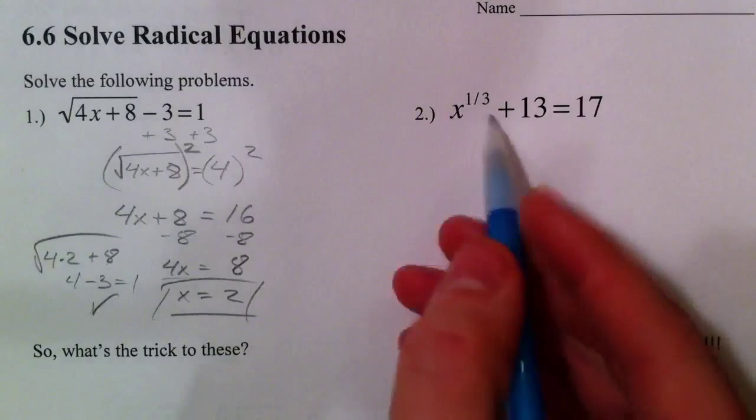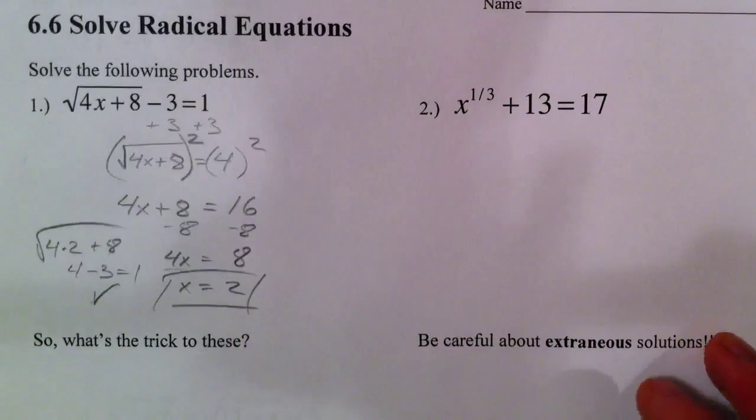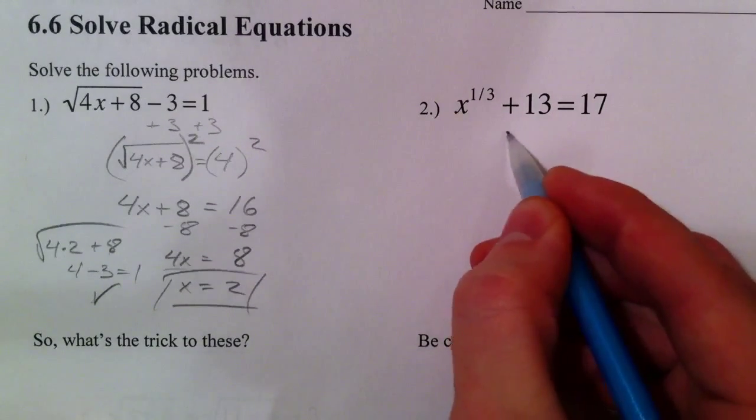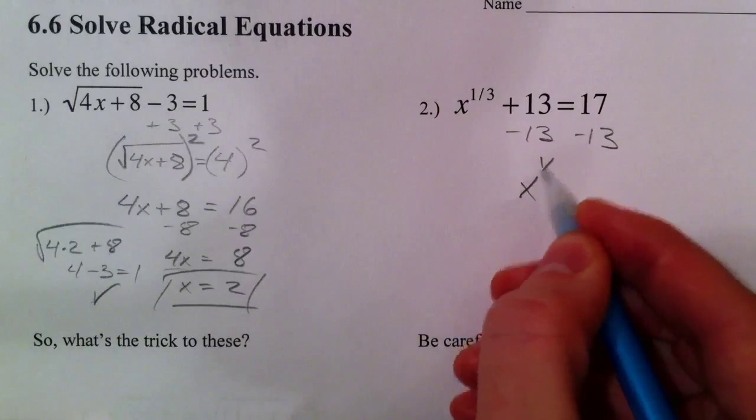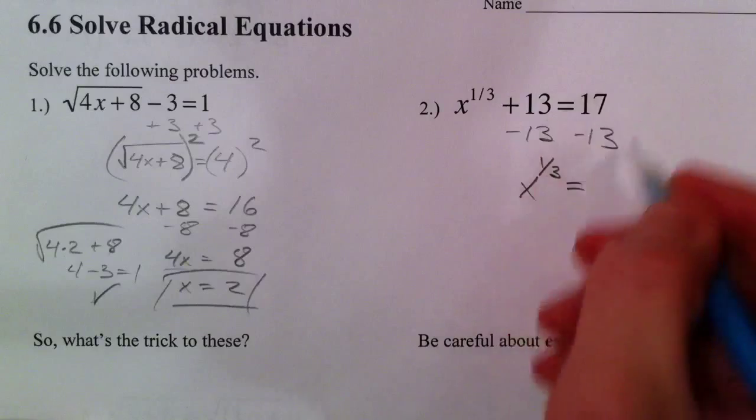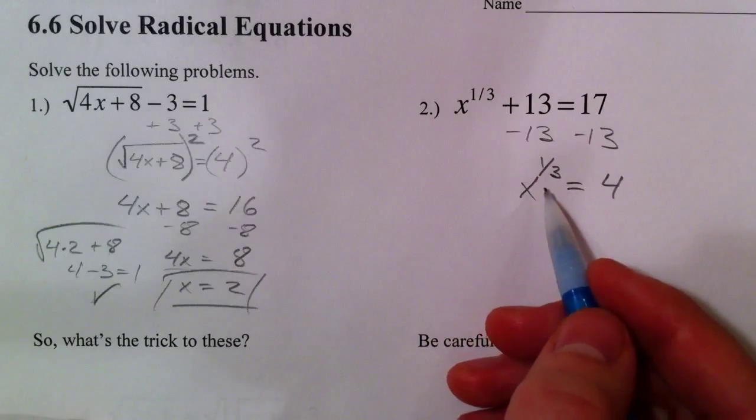Same thing goes over here, a little trickier because we've got the 1 third power, but not a problem because you guys have been well prepared for that. So subtract our 13, get rid of that first. You've got your x to the 1 third equals 4. How do you undo a 1 third power?